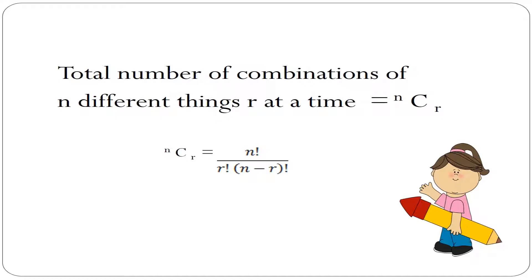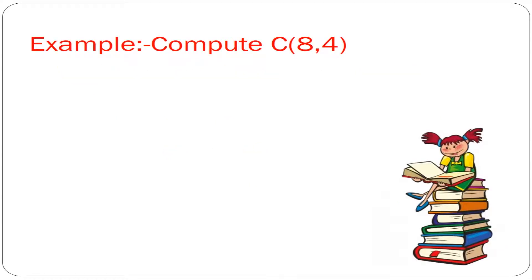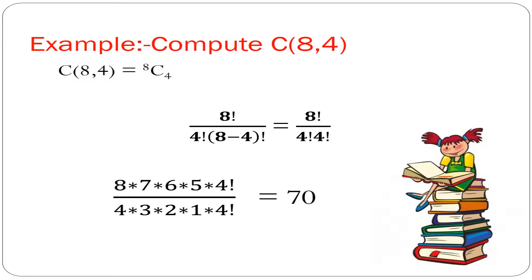Let's compute C(8,4). C(8,4) is equal to 8C4 which is equal to 8 factorial by 4 factorial into factorial of 8 minus 4 which is equal to 8 factorial by 4 factorial into 4 factorial. That is 8 into 7 into 6 into 5 into 4 factorial by 4 into 3 into 2 into 1 into 4 factorial which is equal to 70. Thank you.